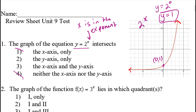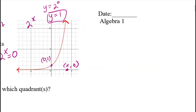Now the question is, does it intersect the x-axis? If this function did intersect the x-axis, that means there would be some value of x we could plug into 2 to the x to make it equal 0 — a y value of 0. If I'm touching the x-axis, I have a y value of 0 for some x value. So let's think about that.